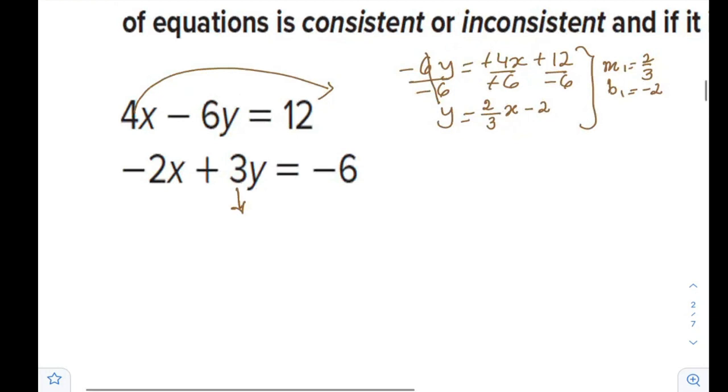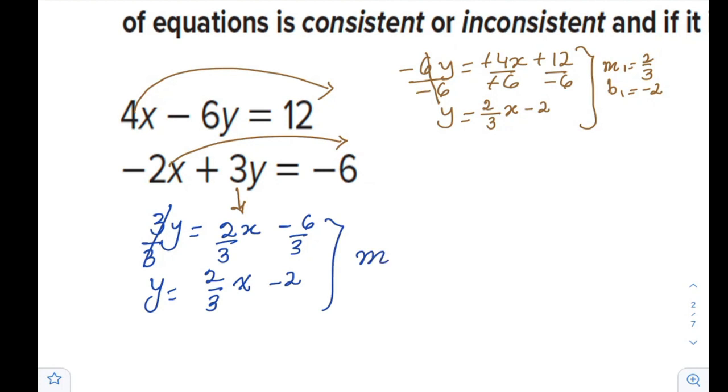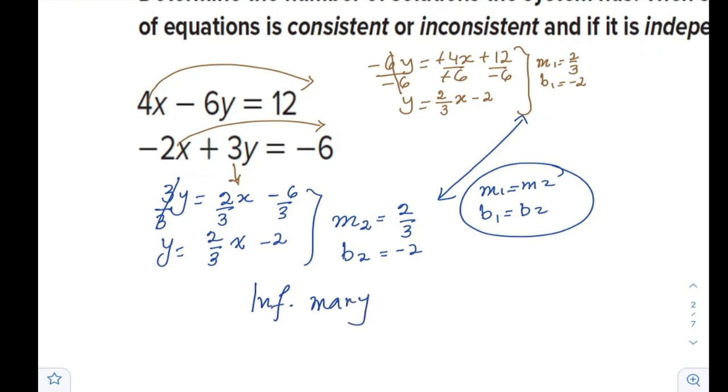Now for the second one, I will do the same thing. I'll shift the negative 2x there. So 3y equals 2x minus 6. And I will divide by 3 to solve for y. Obviously, we have 2 over 3x minus 2. That means here we have slope for the second line is 2 over 3, and my y-intercept is negative 2. Compare your findings. Slopes are exactly the same. These are the same. So we are drawing the same line. That means here we have infinitely many solutions. And that means we have consistent and dependent system.